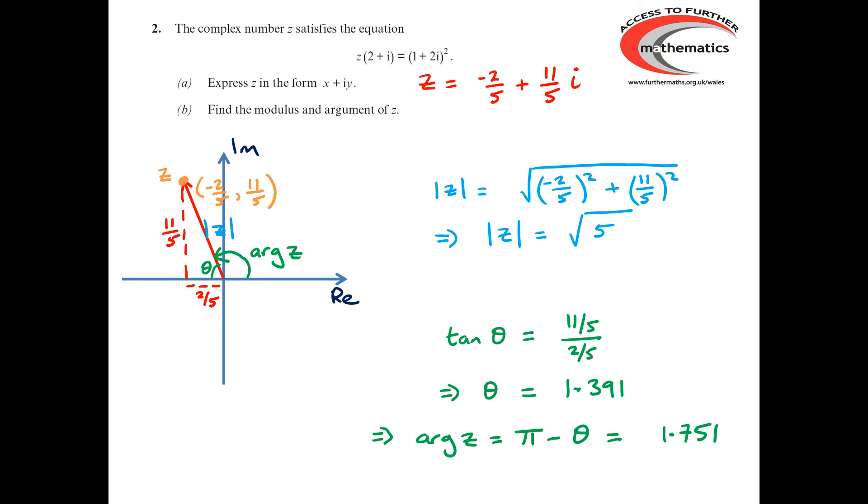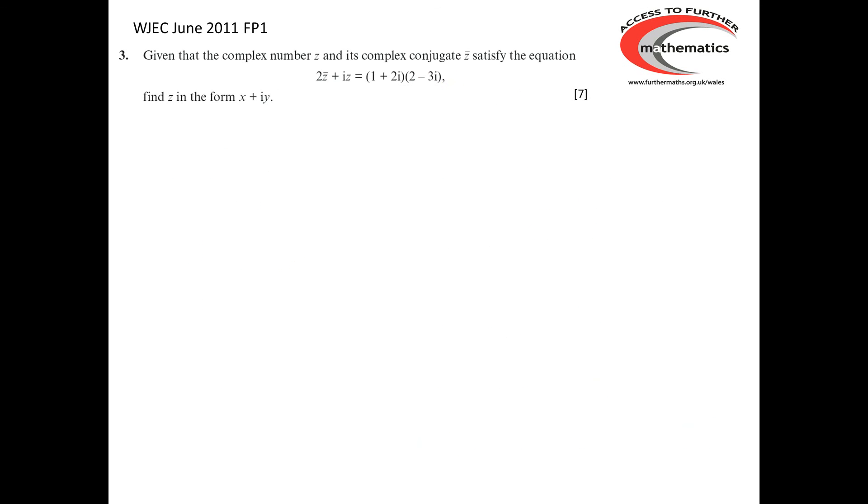Right, let's move on to a second example then, which comes from June 2011. In 2011, we have complex number z and its complex conjugate z-bar satisfy the equation 2z-bar + iz = (1 + 2i)(2 - 3i). We have to find what the complex number z is.